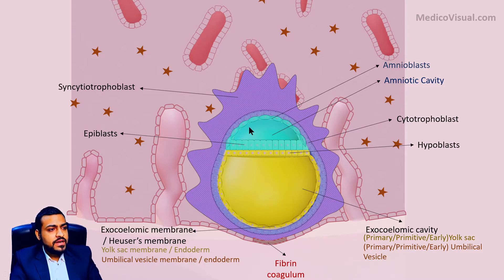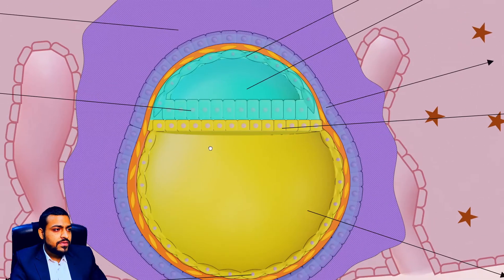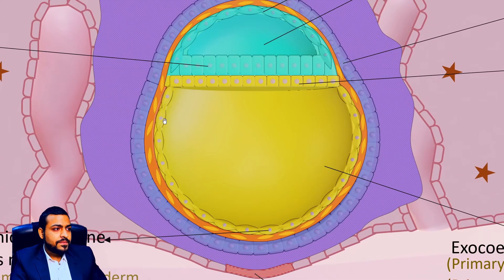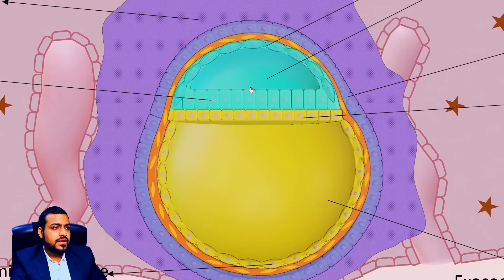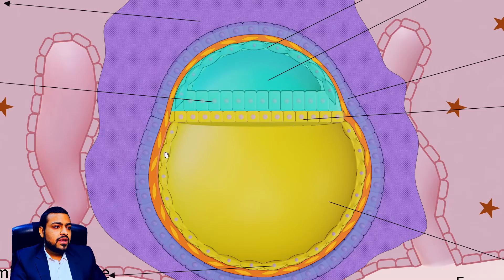During the mid of the second week, what happens is that a layer of new cells — a population of new cells — begins to arise in between the cytotrophoblast and these two cavities: the yolk sac cavity and the amniotic cavity. The source of these cells is not clearly known.